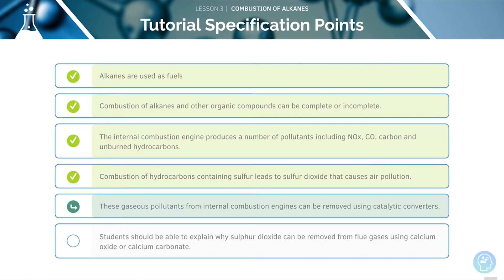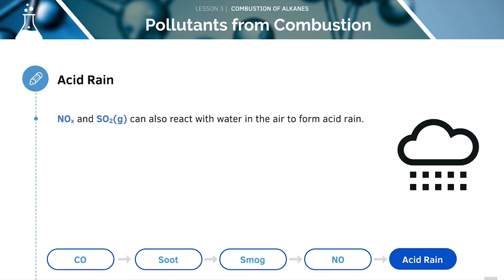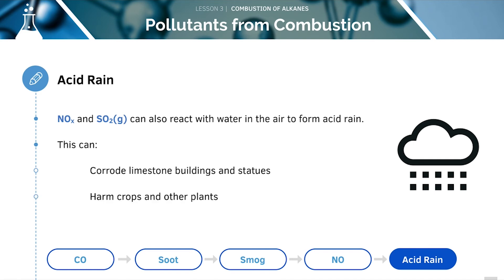Now we'll look at how to remove gaseous pollutants from internal combustion. Nitrogen oxides and sulfur dioxide gas can also react with water in the air to form acid rain. This can corrode limestone buildings and statues, harm crops and plants, and kill aquatic life by acidifying the ponds and lakes that they live in.